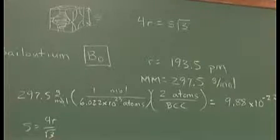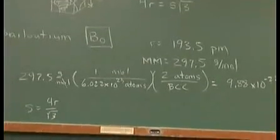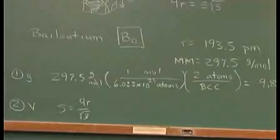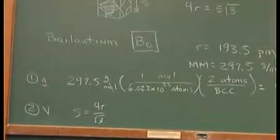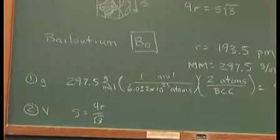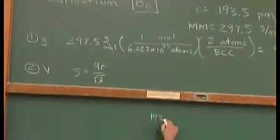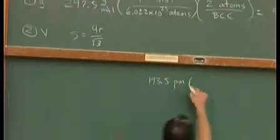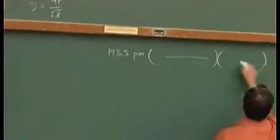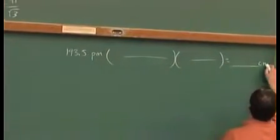Now before we calculate the volume, let's do unit conversion because x-ray crystallography gave us the data, the atomic radii in picometers, let's change that into centimeters. So over to the side here, let me take 193.5 picometers and change it into centimeters.